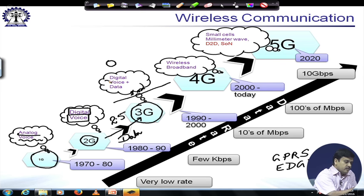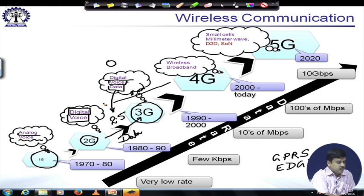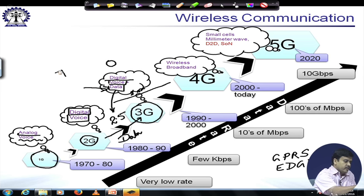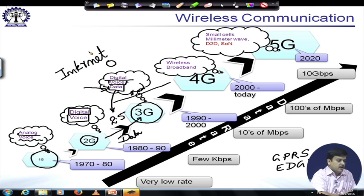3G is of course a fully digital system. However, it introduced separate paths for voice and data. Compared to 2.5G where data was carried within the voice channel, in 3G systems there are separate paths for voice and for data. As things improved and people became used to data services, the need for data became more and more important, especially with the widespread use of the internet for all purposes, from entertainment to scientific and administrative purposes.